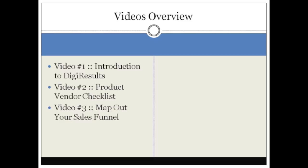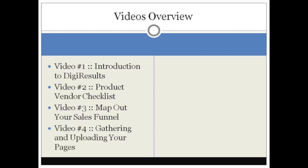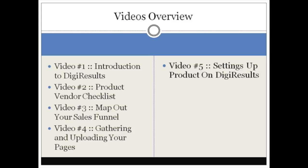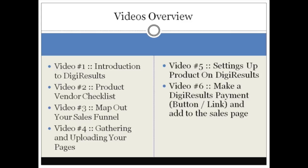If you know exactly what your sales funnel is going to look like, then implementation is going to be a lot easier. Video four covers gathering and uploading your pages — your thank you pages, sales page, and affiliate page. I'm going to show you what you need and how to use the tools to edit the pages. Video five is setting up your product on Digi Results, and once you have everything from videos two, three, and four, this step is very easy and should only take about 10 to 15 minutes.